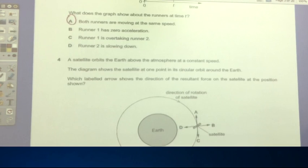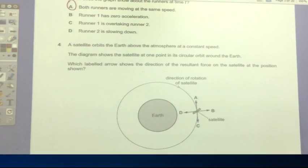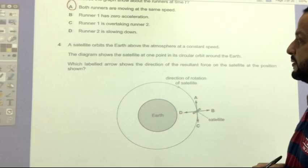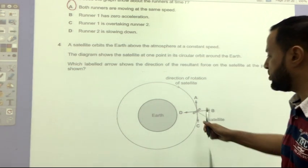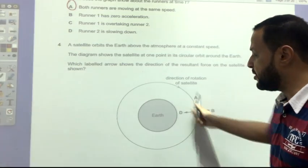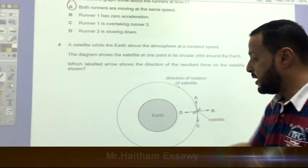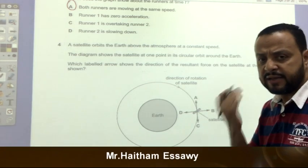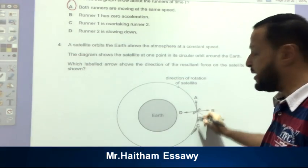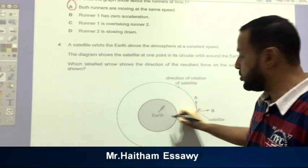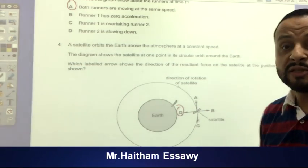After that, a satellite orbits the Earth above the atmosphere at a constant speed. The diagram shows the satellite at one point in its circular orbit around the Earth. Which labeled arrow shows the direction of the resultant force on the satellite at the position shown? As you see, this is the satellite moving around the Earth. And here we have centripetal force. And as we said, centripetal force, its direction perpendicular to the direction of the motion and its direction toward the Earth. So this is D is the right answer due to the centripetal force.